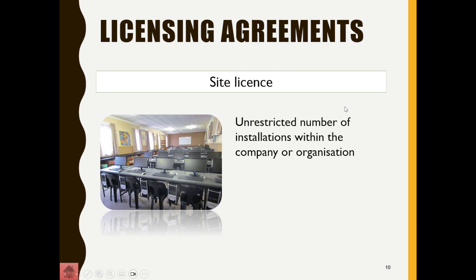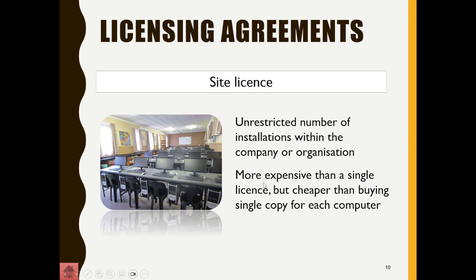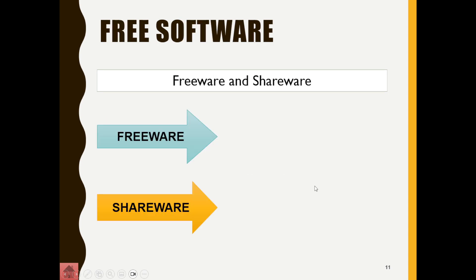A multi-user or site license means there can be an unrestricted number of installations within a company or organization. It is more expensive than a single license, but imagine a company with 150 computers — you can't be buying individual licenses for each PC. So you buy a site license, also known as volume licensing, which is more expensive upfront but cheaper in the long run.